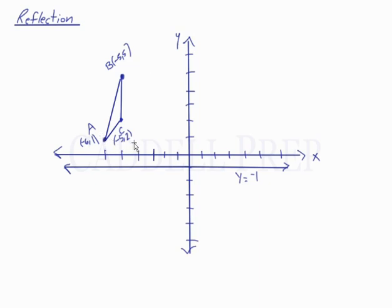Okay, so similarly, let's reflect this over the line y equals negative 1. We're going to reflect triangle ABC over the line y equals negative 1. So here we have the line y equals negative 1.